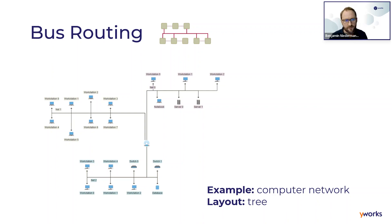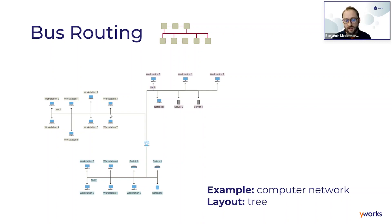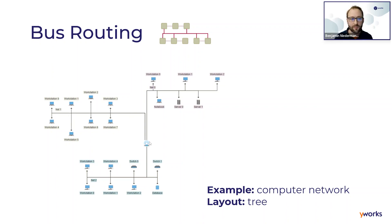The first aggregation example is bus routing, where edges representing many-to-many connections are summarized. For example, workstations are all connected with a router and can also communicate with each other. A bus is introduced — which also has a technical correspondence in computer networks — visually representing all those connections as one edge, summarizing all connections to the router. In this example a tree layout was used.